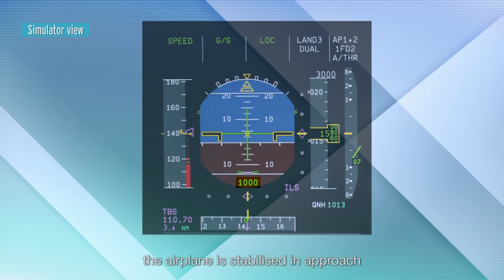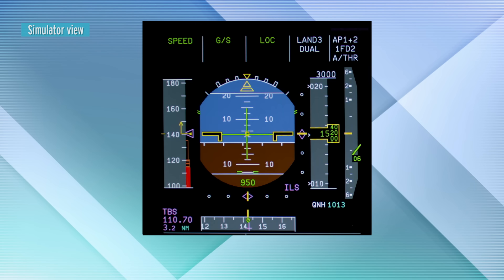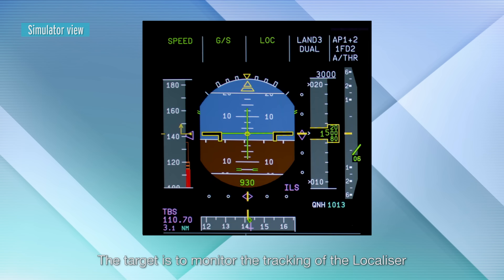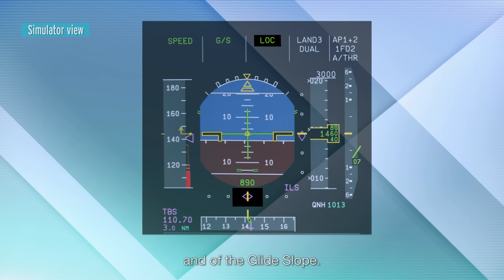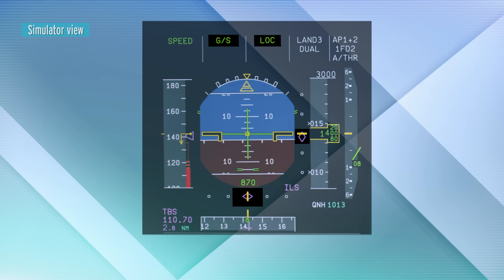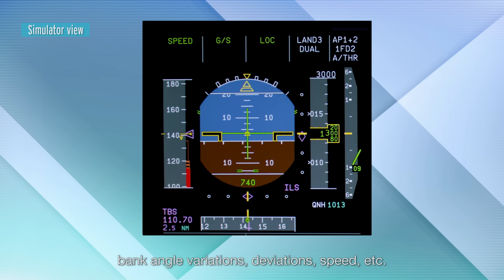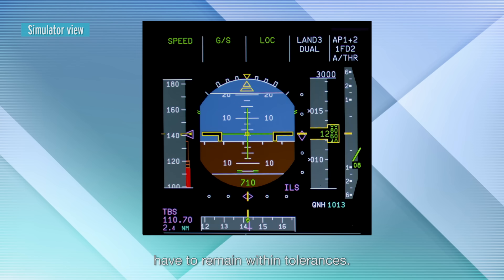For each test, the airplane is stabilised in approach, at the latest at 1000 feet. The target is to monitor the tracking of the localiser and of the glide slope. Whatever the conditions, bank angle variations, deviations, speed, etc. have to remain within tolerances.